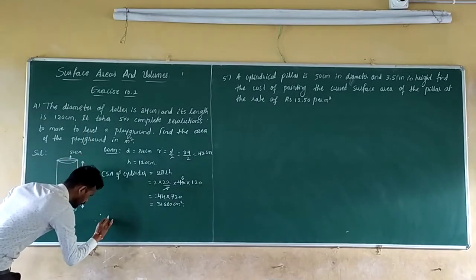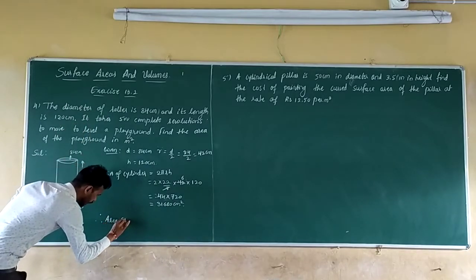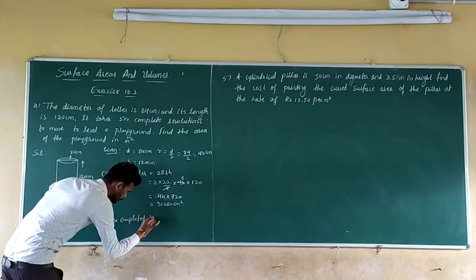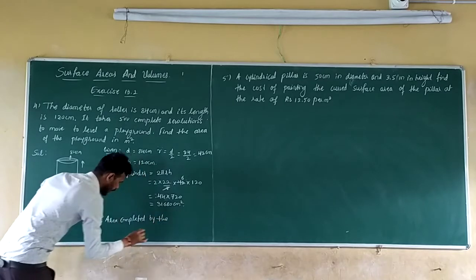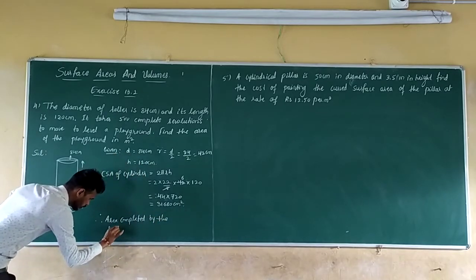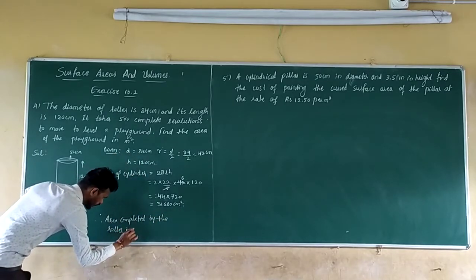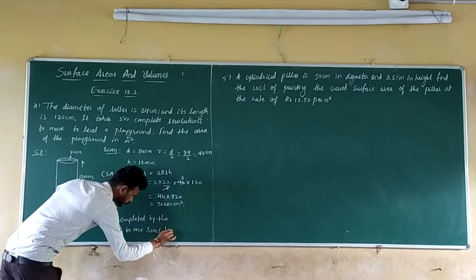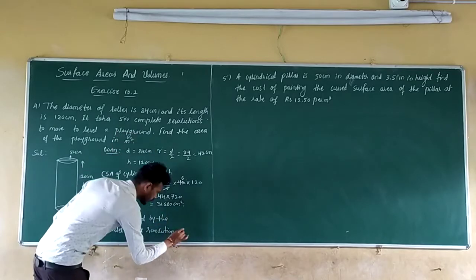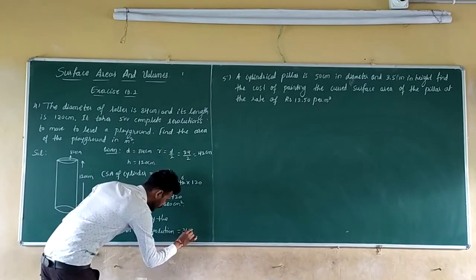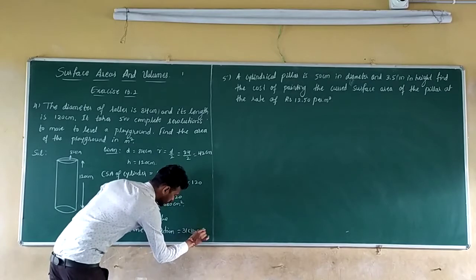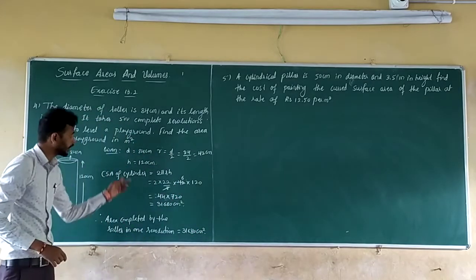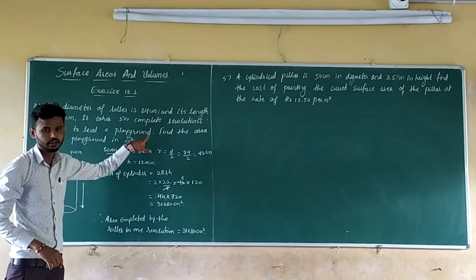Therefore, area completed by the roller in one revolution equals 31,680 cm². Now find the area completed by the roller in 500 revolutions.